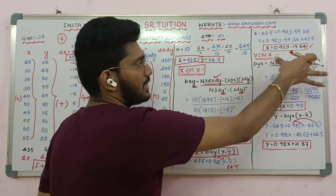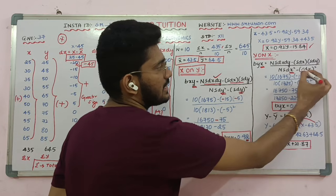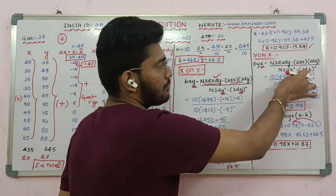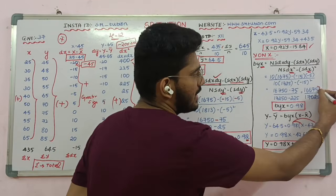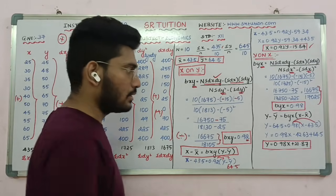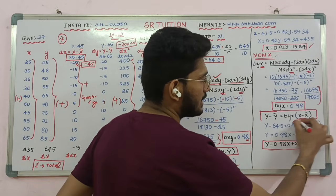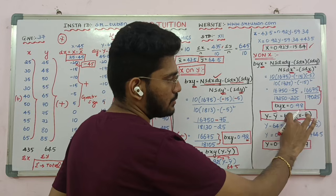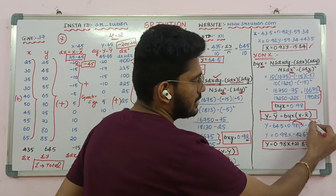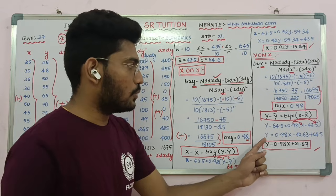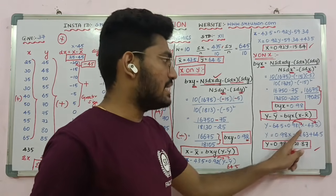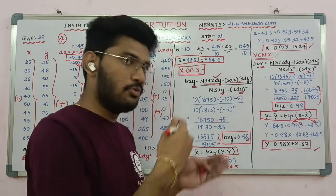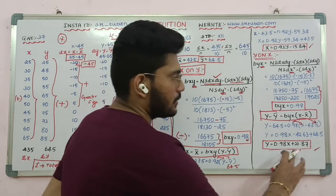Next, for y on x, with a little update. Using sigma dx squared minus sigma dx whole squared divided, you will get b(yx) equal to 0.98. In the formula, substituting for y and x: y is equal to 0.98x minus 42.63, with y̅ equal to 64.5 factored in.